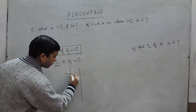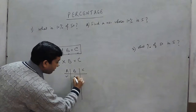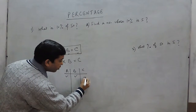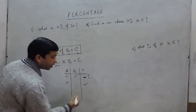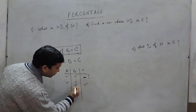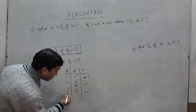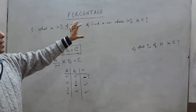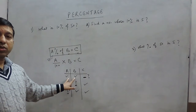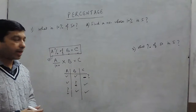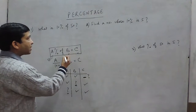Now the question arises: out of A, B, and C, either A and B are given and we have to find C, or A and C are given and we have to find B, or B and C are given and we have to find A. In every basic percentage question, this will be the format — any two values are given and the third value we have to find out.